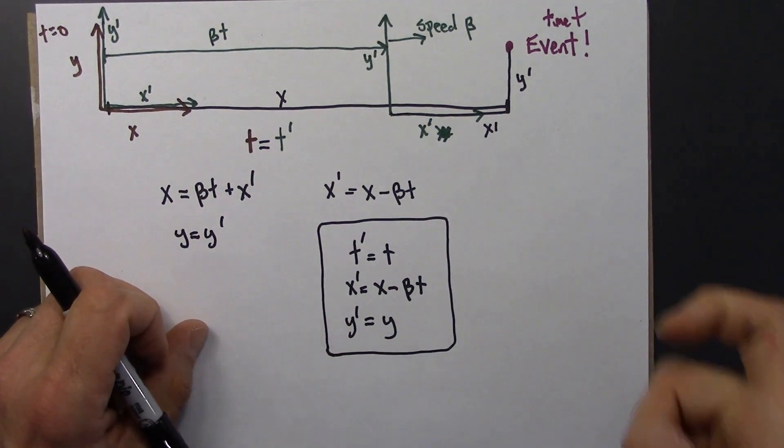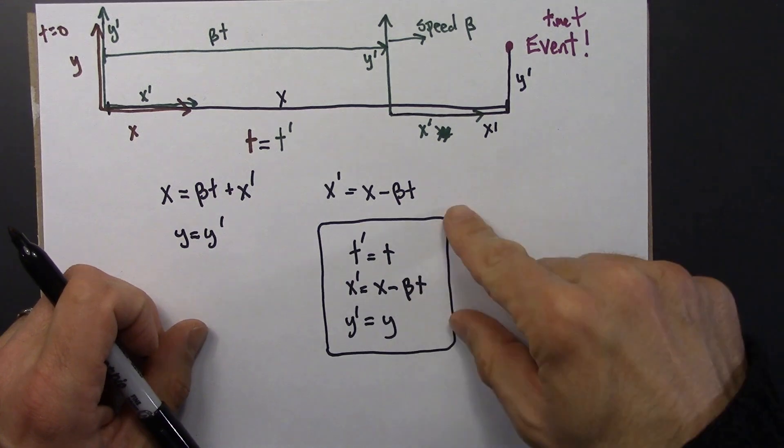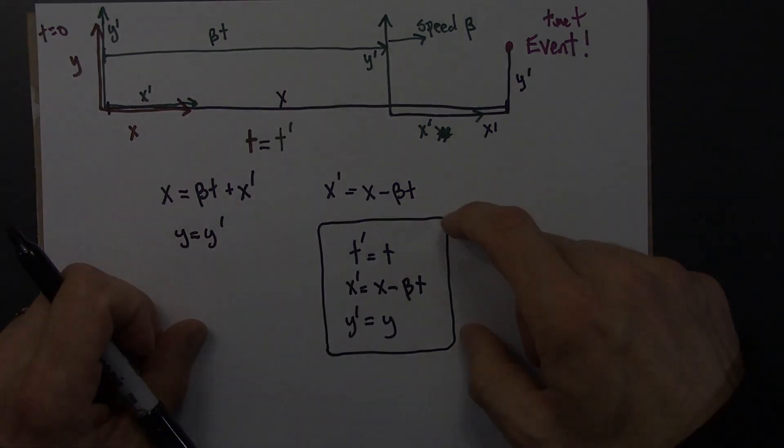So these equations are known as the Galilean relativity equations. And I suspect this is a little abstract right now, but it's going to get a lot better in the next video when we work through an example together.